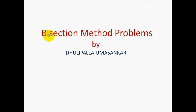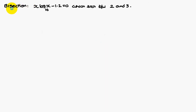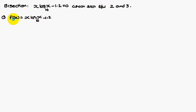Today we are going to discuss bisection method problems. The first problem is x·log₁₀(x) minus 1.2 is equal to 0, which lies between 2 and 3. The root lies between 2 and 3, we have to find out. So given f(x) is equal to x·log₁₀(x) minus 1.2.